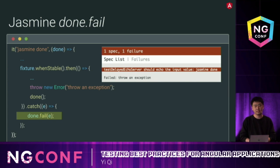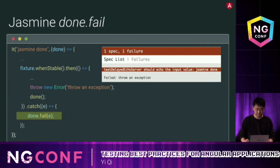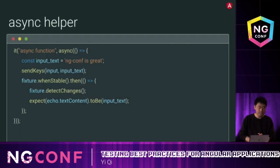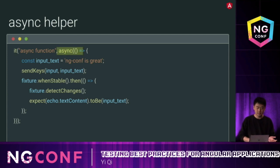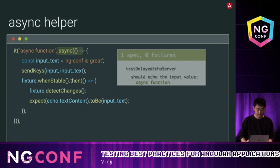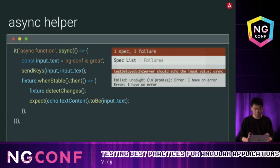It works, but as we can see, to achieve this we have to add lots of extra lines of code — done, catch, done.fail — and it's easy to forget. Do we have an easier way? The answer is yes. In Angular, we provide the async helper, which automatically waits for all tasks inside the Angular zone. We just put our task inside the async function, the test passes, and if there's an exception, it shows the correct error.